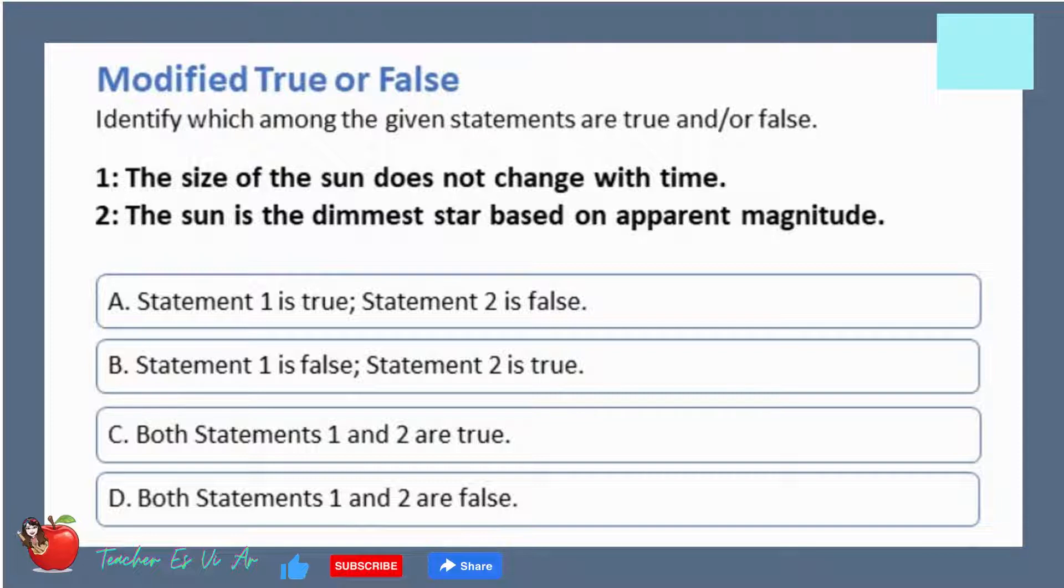Modified true or false. Identify which among the given statements are true and or false. 1. The size of the sun does not change with time. 2. The sun is the dimmest star based on apparent magnitude.